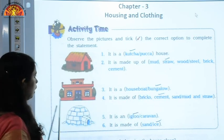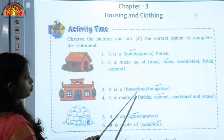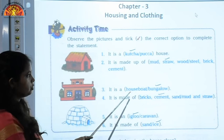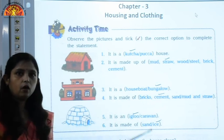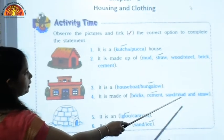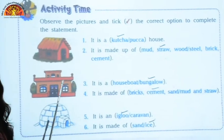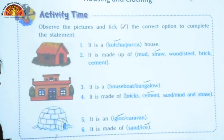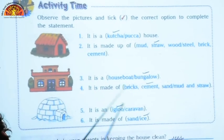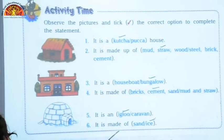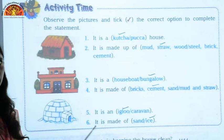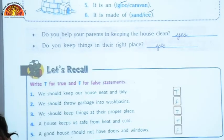The next house — is it a houseboat or bungalow? We can see it is a bungalow. Houseboats are generally on water bodies. It is made up of bricks, cement, sand, or mud and straw — cement will come here. The next picture — is it an igloo or a caravan? It is an igloo and it is made up of sand or ice — so it is made up of ice.